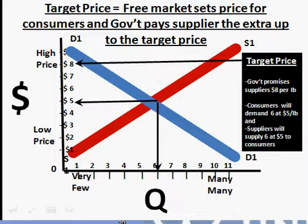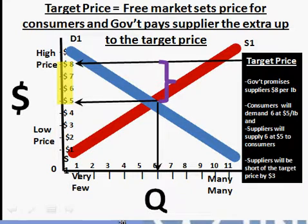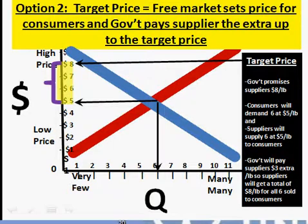Consumers will buy six million pounds at five dollars a pound, and suppliers are willing to supply six million pounds at five dollars a pound. So we're going to clear the market in terms of the amount of coffee produced. However, the government is going to subsidize the farmers by an additional three dollars a pound for each of those six million pounds that the farmers produced. We call this a target price system, and you'll have a homework problem dealing with exactly this situation — taken right out of the farm support policies that have been in place for decades in the United States.